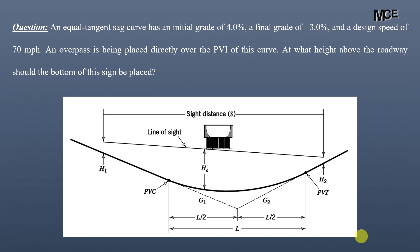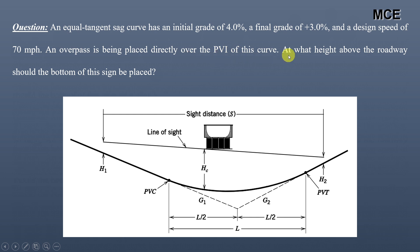Hello and welcome back to the Master of Civil Engineering. In this video you will learn how to find the underpass sight distance for a sag vertical curve. I have been given a question which states that an equal tangent sag curve has an initial grade of 4% and a final grade of 3% and a design speed of 70 miles per hour. An overpass is being placed directly above the PVI of this curve, and we have to find at what height above the roadway the bottom of the sign should be placed.